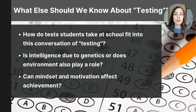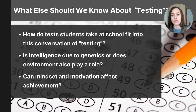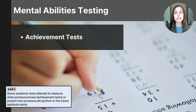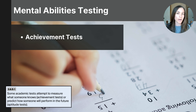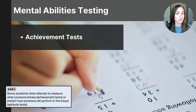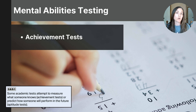Now let's zoom out into some broader concepts about testing in general. For the remainder of the video, we'll look at how the tests students take at school fit into this conversation. Let's start with two important types of tests: achievement tests and aptitude tests. Achievement tests measure what a person has already learned or mastered in a specific subject area. They check the knowledge and skills that have been taught. A common example is state standardized tests, which evaluate the knowledge students have acquired in a subject at the end of a school year, like math or reading.